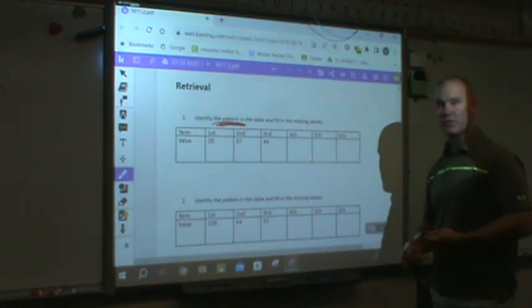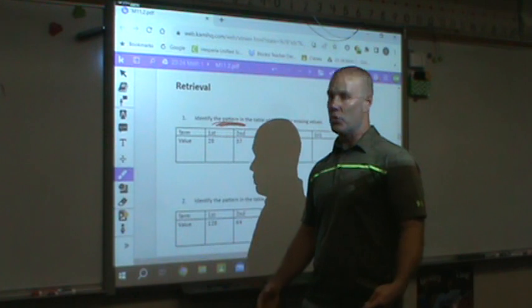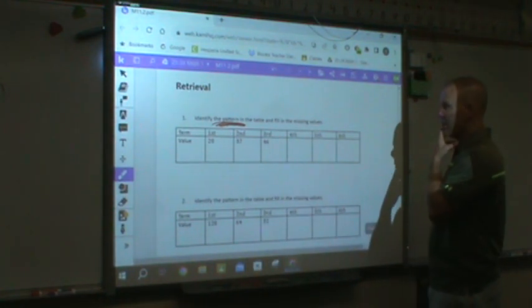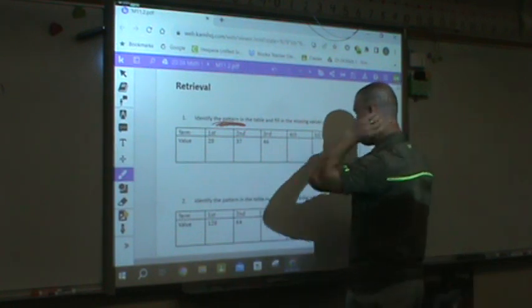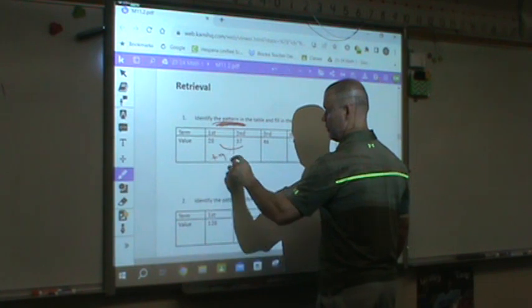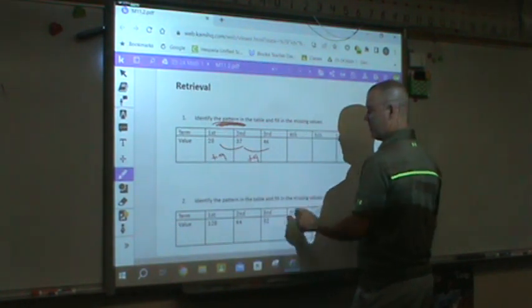I want you to try this on your own. So don't get some help from other people. Try this on your own, see how you do. It can be tough. But if you look, what do you notice that's happening? 28 to 37 plus 9. 37 to 46 plus 9.